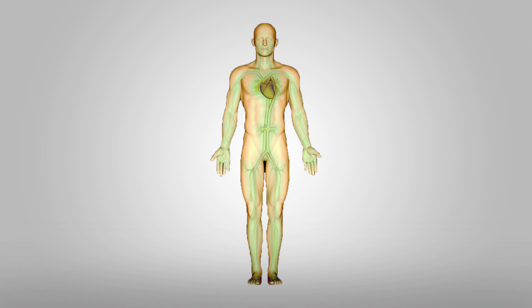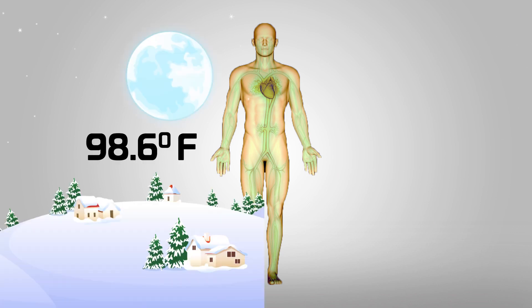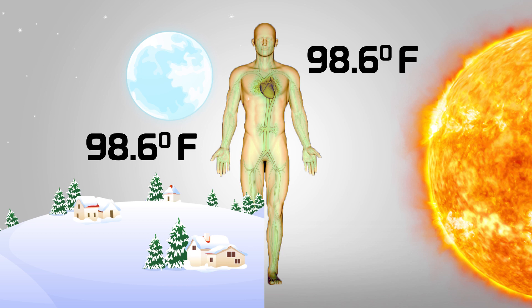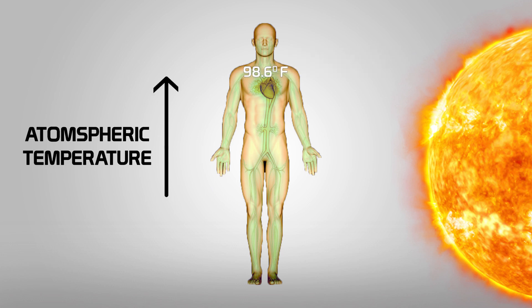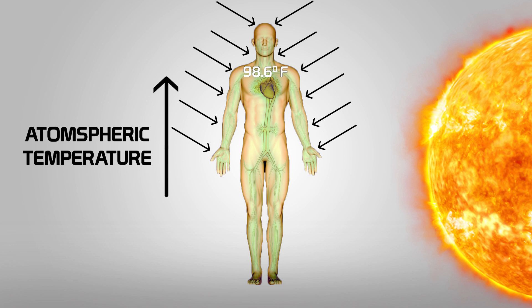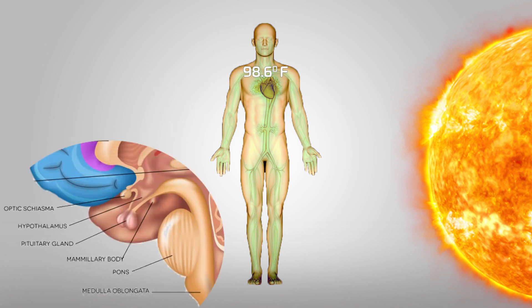The body temperature is 98.6. The hypothalamus monitors this. At this time, when the body temperature is very high, suppose we are in that situation — the body temperature is very high. At this time, the hypothalamus and pituitary gland respond.